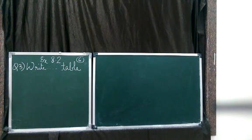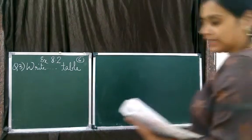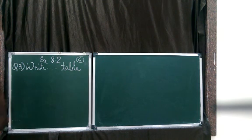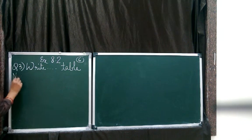Today we have to start with question number 3 of exercise 8.2. The question says write the following decimals in a place value chart. That means we have to make a place value table.